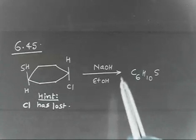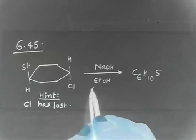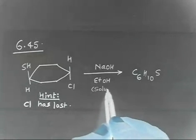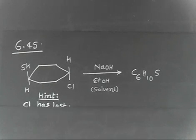And if I treat this compound with NaOH in solvent EtOH, this is ethyl alcohol acting as a solvent. If I treat this in solvent ethyl alcohol, the final product is C6H10S.